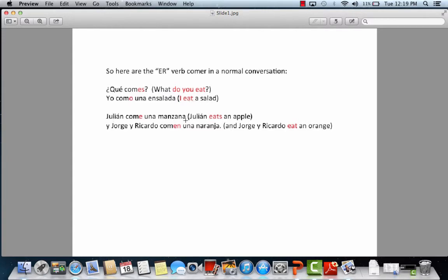Julián come una manzana. The letter E attached to the stem of the verb comer is representing a he, a she, or usted. In this example, it's a he. His name is Julián. Jorge y Ricardo comen una naranja. The EN attached to the stem represents more than one person, yourself not included. In my example, the people are Jorge and Ricardo, but it could be anybody. So this translates, Jorge, Ricardo eat an orange.